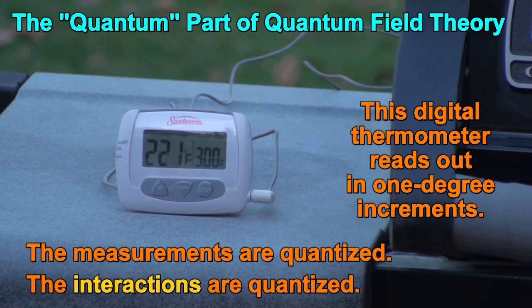For most of ordinary life, we don't notice the digital nature of the world. It gets smoothed out because the digital quanta are very small at low energies. The digital nature shows up when the energy levels are raised.